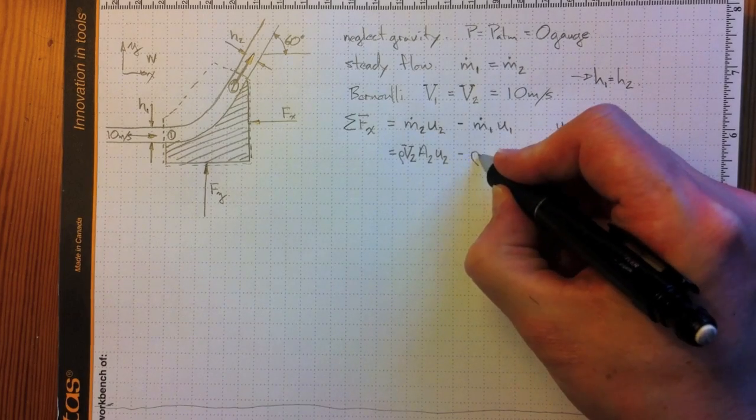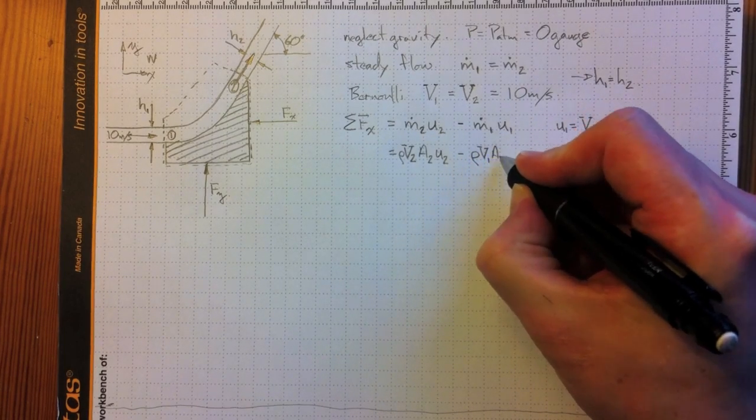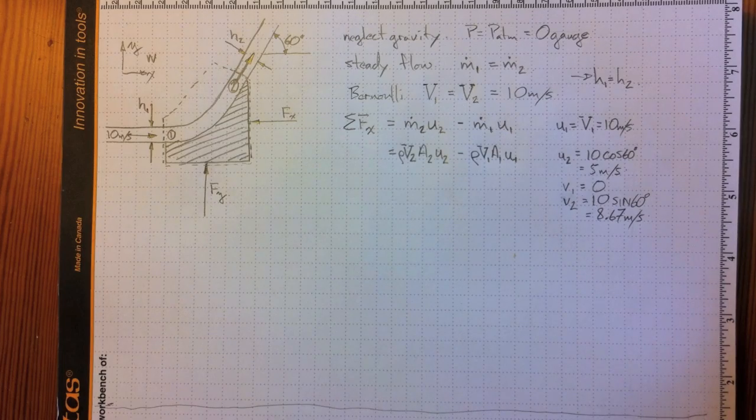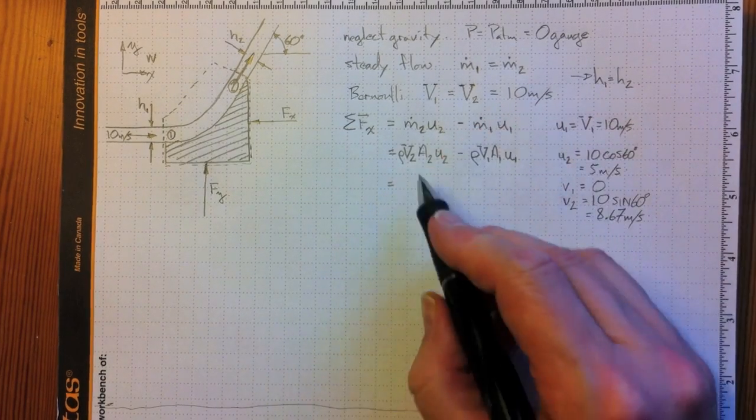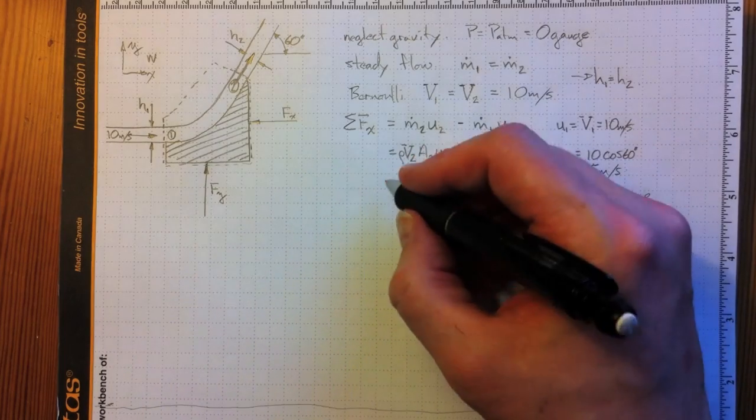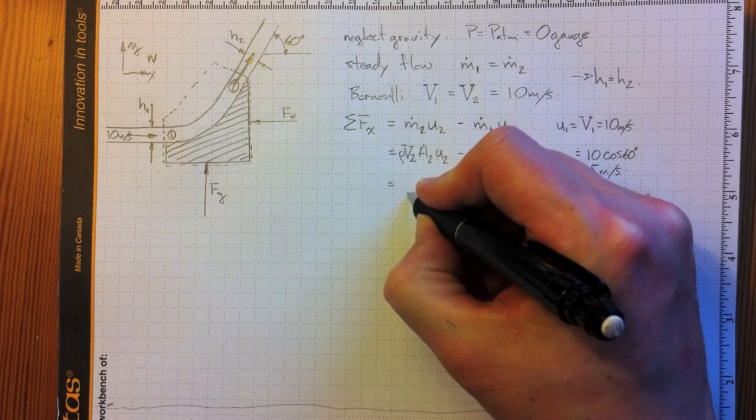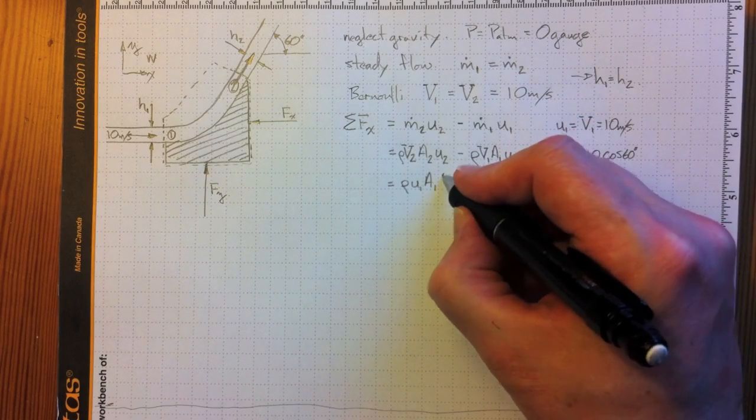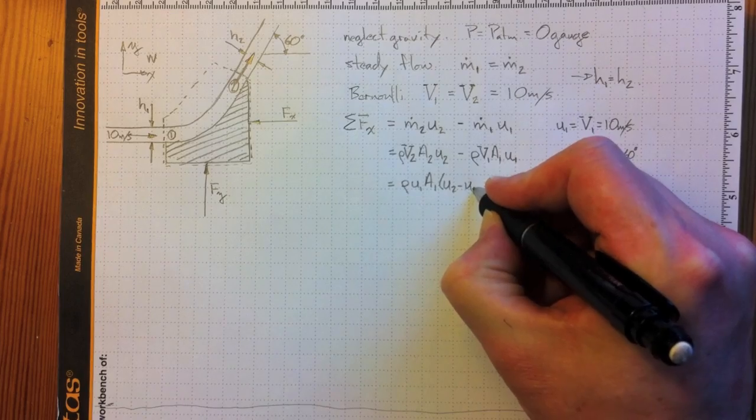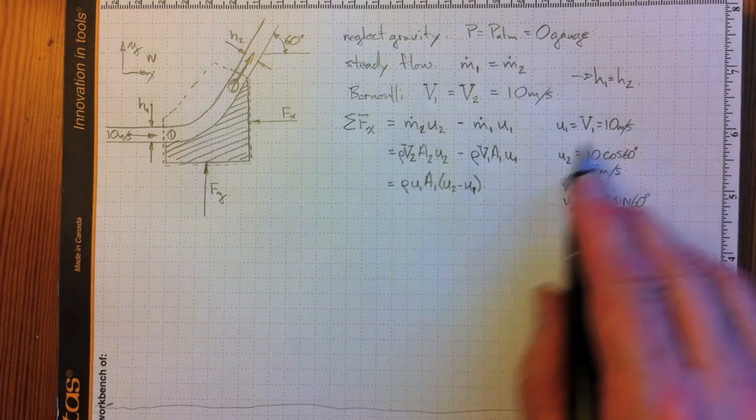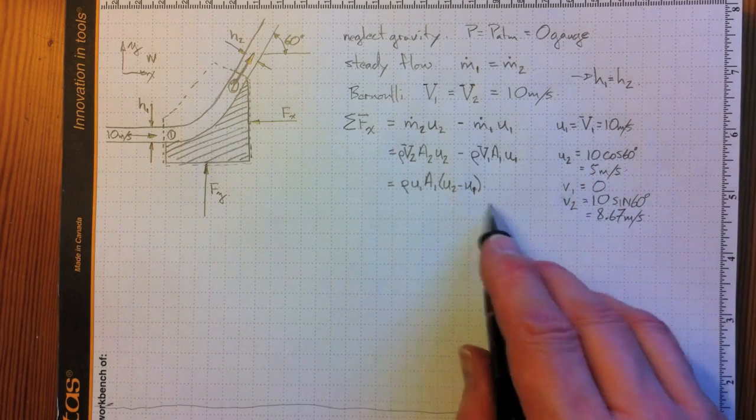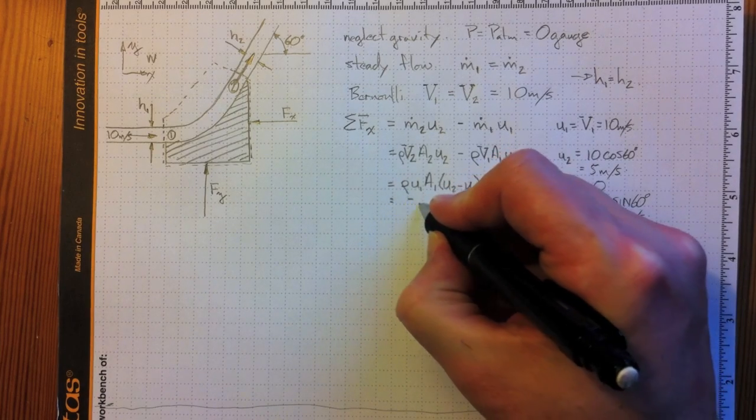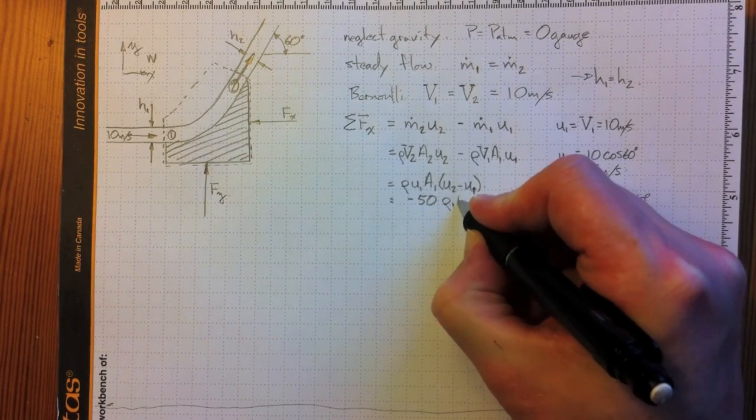Or, observing that v2, a2, and v1, a1 are both the same, it'll be density times u1 times a1 times u2 minus u1. u1 is 10, u2 is 10 cos 60, minus u1. We wind up with negative 50 times rho1, a1.